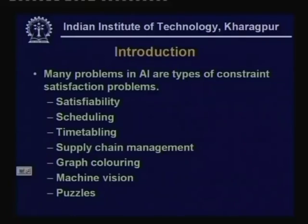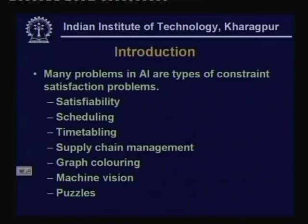There are other problems like supply chain management and the graph coloring problem which we will discuss in more detail today. Constraint satisfaction also arises in machine vision, edge detection, walls filtering, and different types of puzzles. For example, in crossword puzzles you are given a rectangular grid and must fill up words row-wise and column-wise, with constraints because several words may share a common letter.